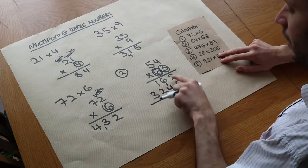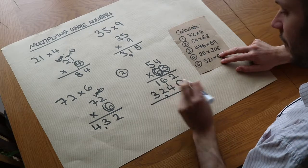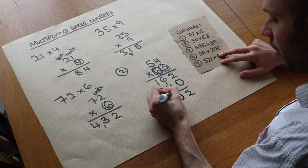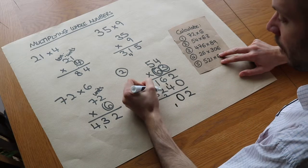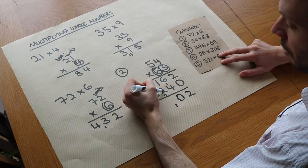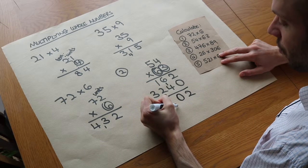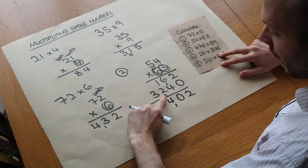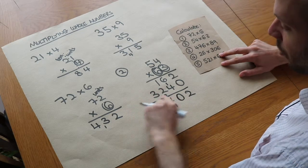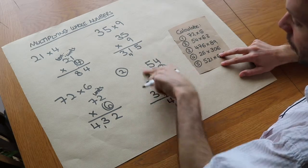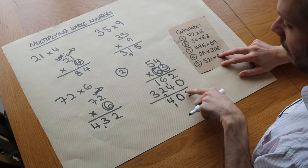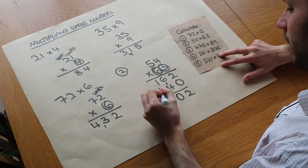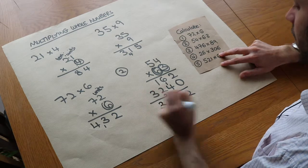Adding the two rows: 2 plus 0 is 2; 6 plus 4 is 10, so put 0 and carry 1; 1 plus 2 is 3, plus the additional 1 is 4. Note that those previous carries were for the multiplication step and are not used here in the addition. Finally we have 3, giving the answer 3,402.